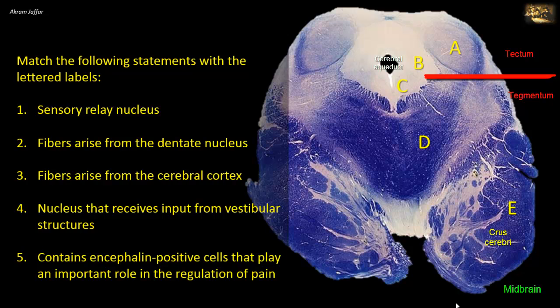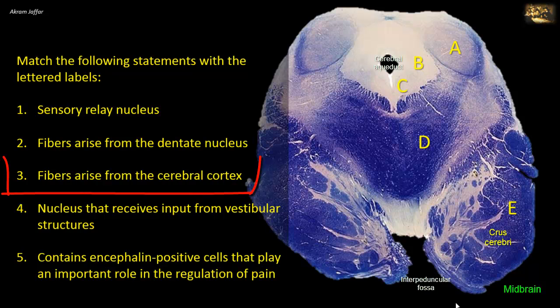This is on either side of the interpeduncular fossa. The crus cerebri contains projection fibers: corticopontine, corticobulbar, and corticospinal. The fibers, as the name indicates, they arise in the cerebral cortex and then descend to the brainstem or spinal cord. Therefore, E matches with three: fibers arise from the cerebral cortex.